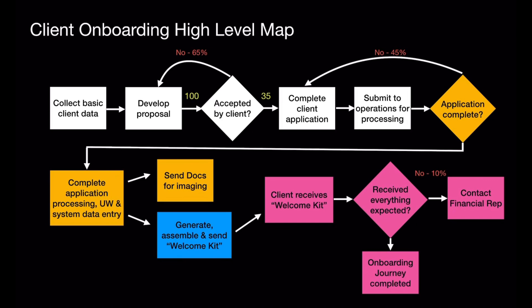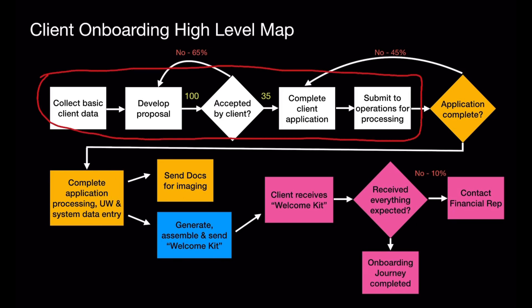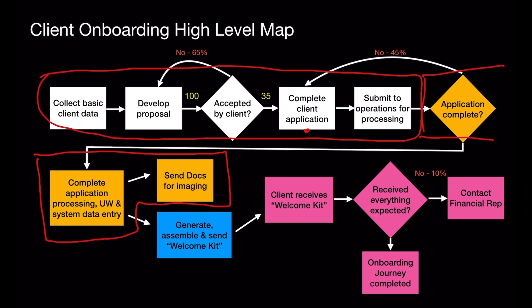You may notice that there are three distinct milestones in this journey. The first milestone has to do with the financial rep developing a proposal, getting the client to accept it, and then completing an application and submitting it for processing. Then the operations team takes over to make sure they have everything they need to process that request and get it imaged in their document management system. Then a different department picks it up to generate and assemble a welcome kit, and ultimately the customer determines if they got everything they needed and all the services they asked for.